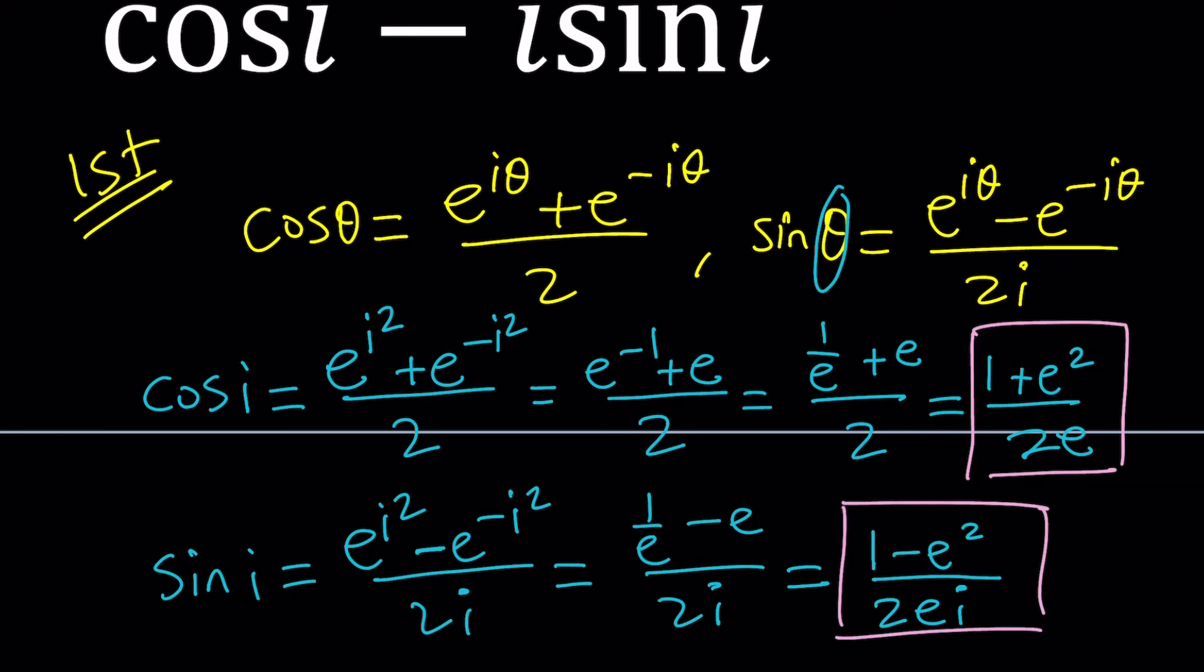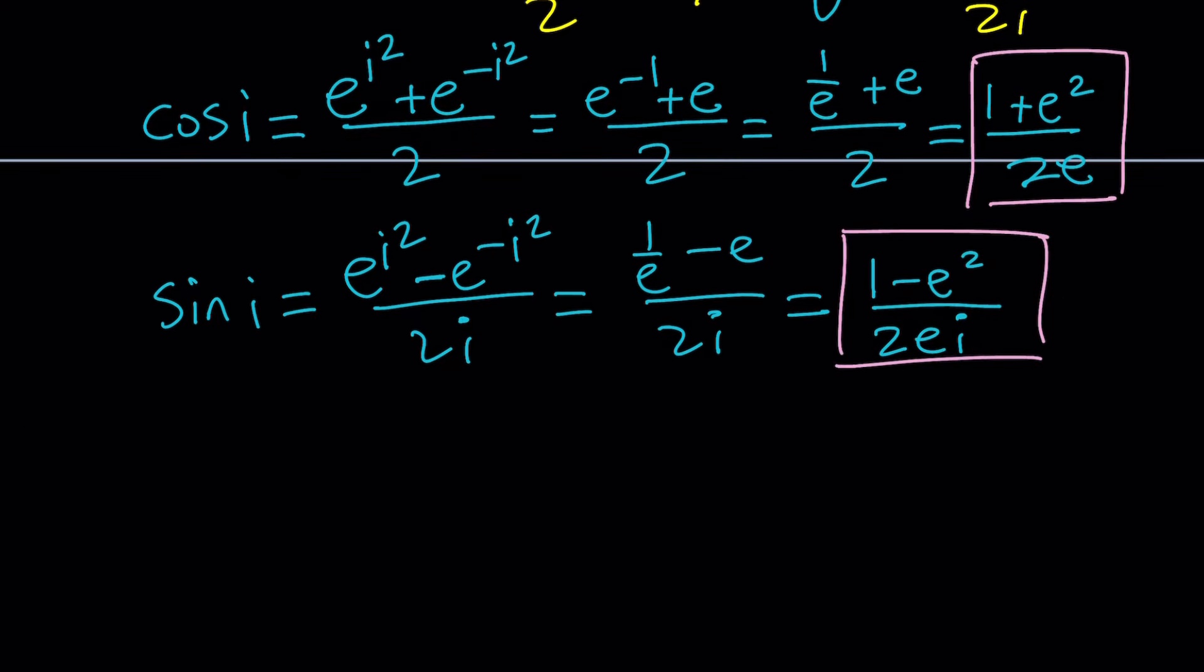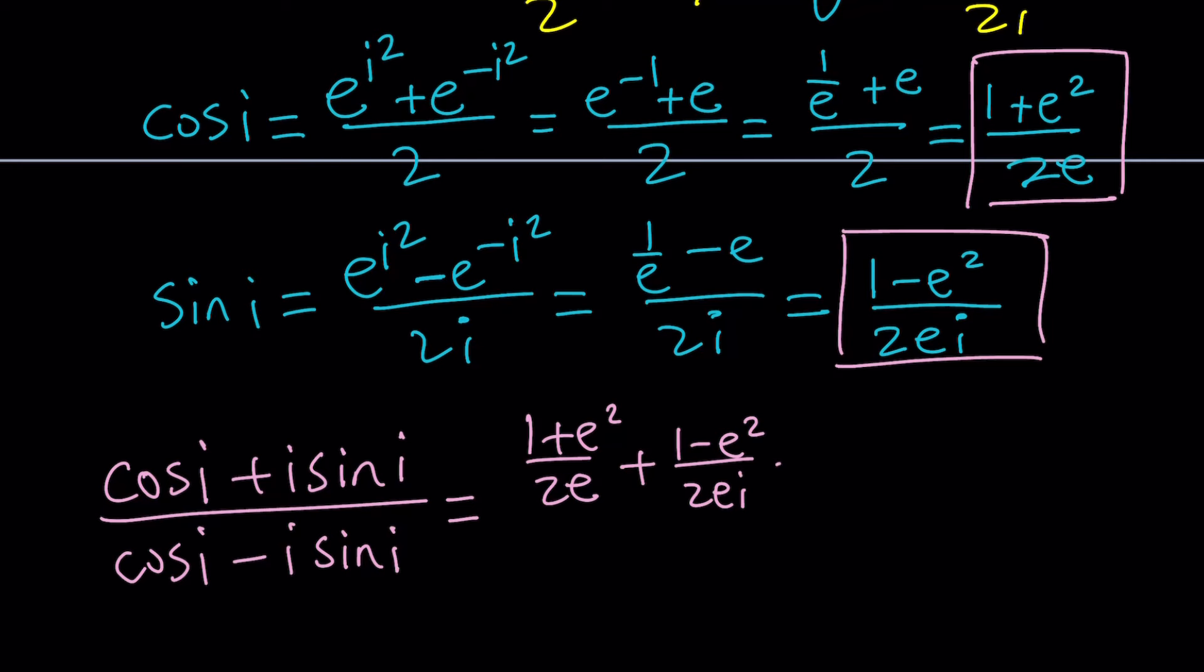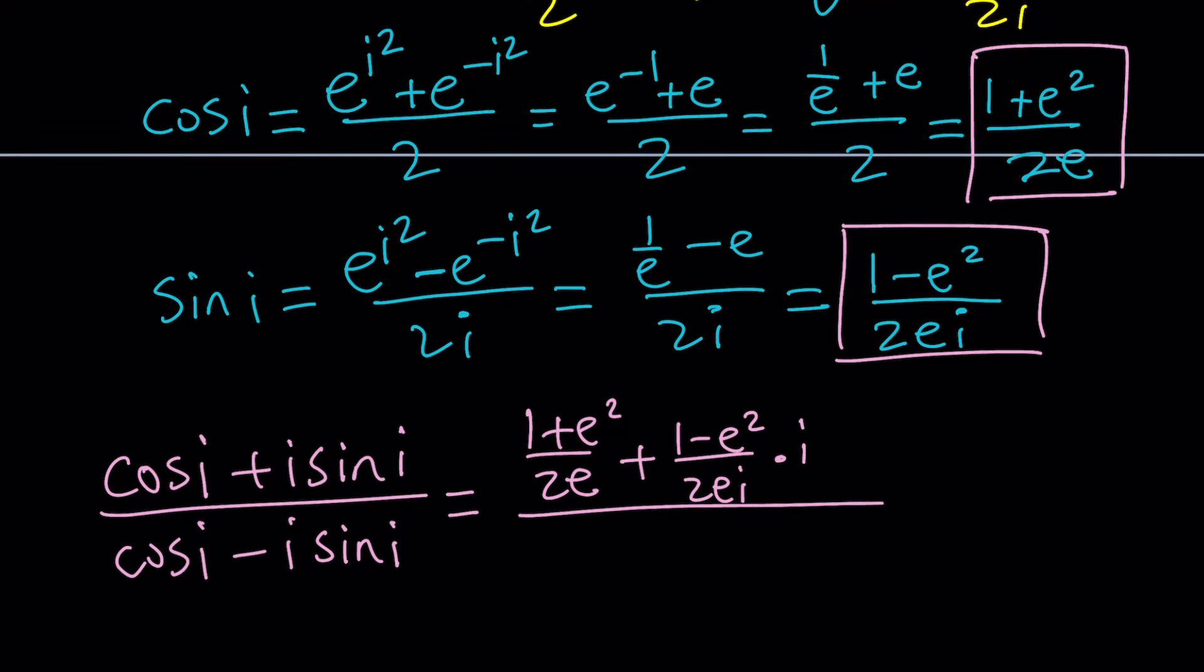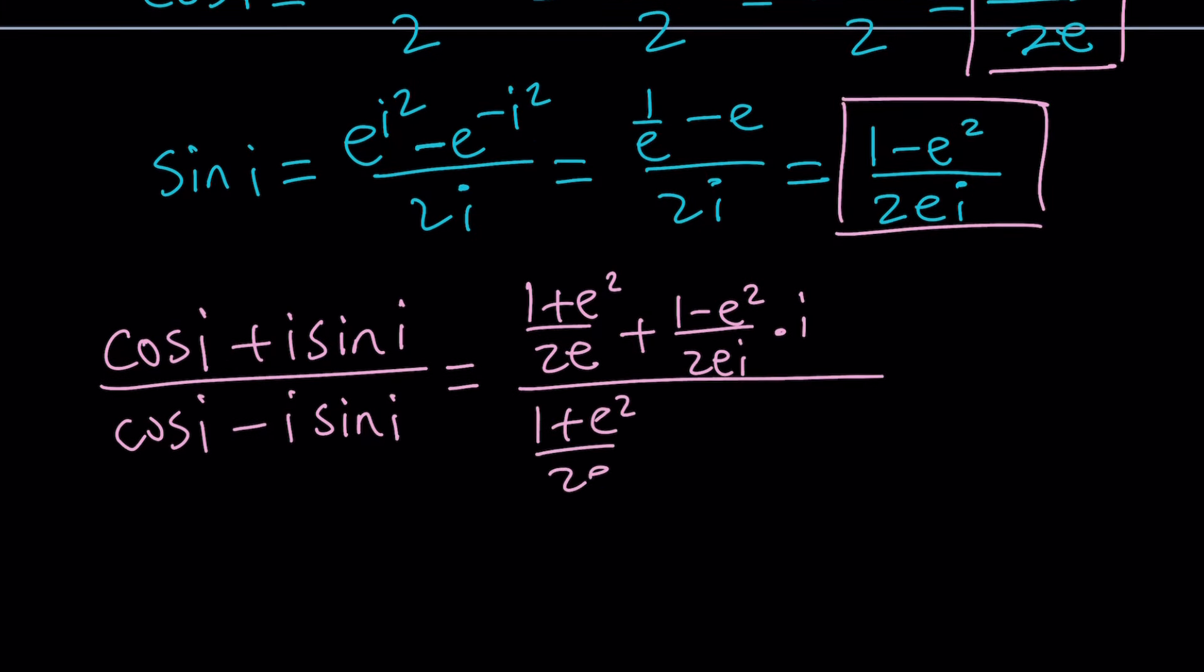And this will be the sine i. So we've got both of these values. Let's go ahead and plug them in. We're trying to evaluate cosine i plus i sine i divided by cosine i minus i sine i. Cosine i is 1 plus e squared divided by 2e plus sine i is 1 minus e squared over 2ei, multiply by i, and that is divided by the same thing with a minus sign. All right, that's the expression.